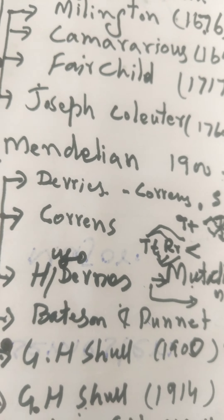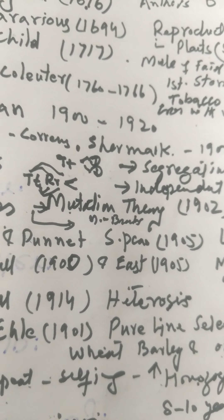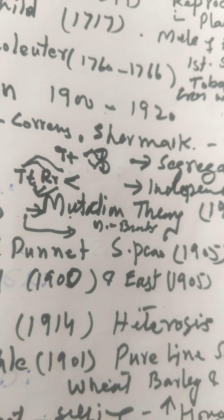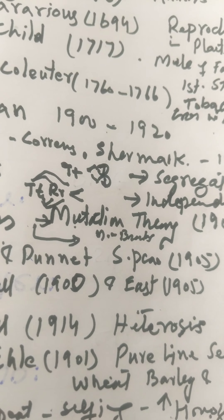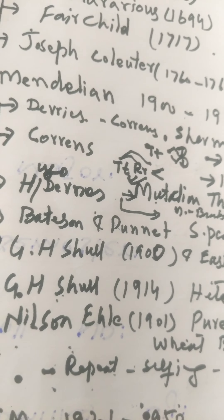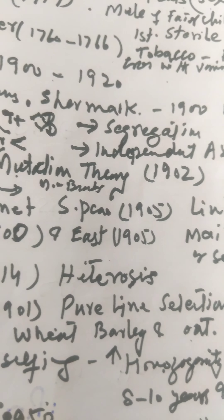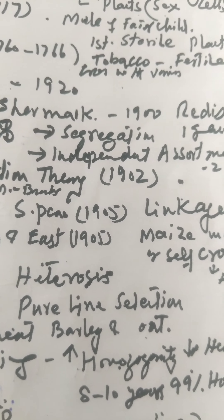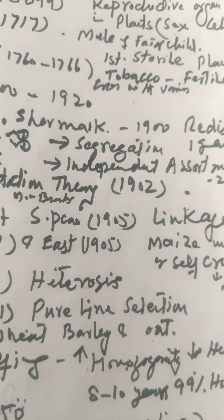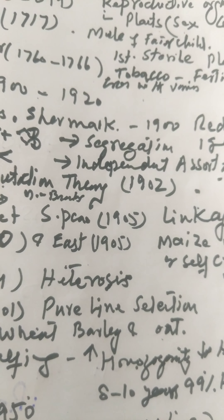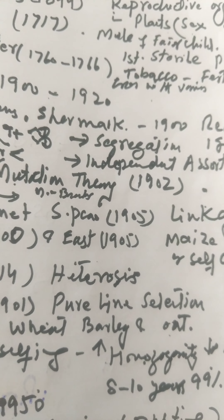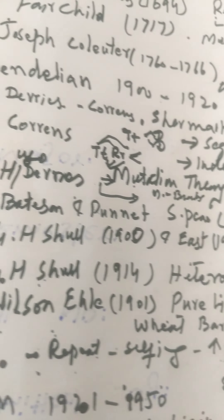Next is Hugo DeVries. In 1902, he proposed the mutation theory, and mutation breeding was also developed based on this mutation theory. Next are Bateson and Punnett. In 1905, they proposed the term 'linkage' by working on sweet peas. They stated that genes found on the same chromosome, when closely located, move together to the next generation.